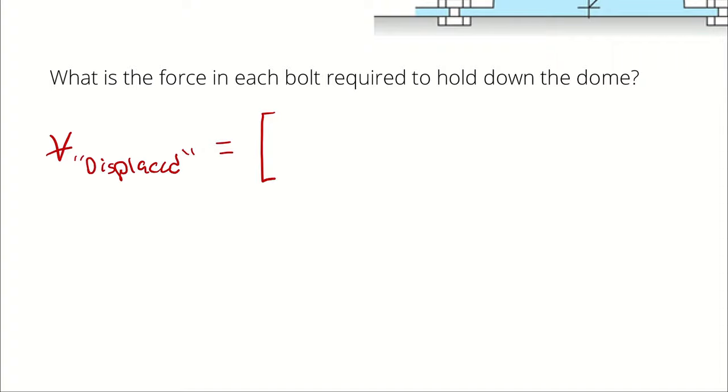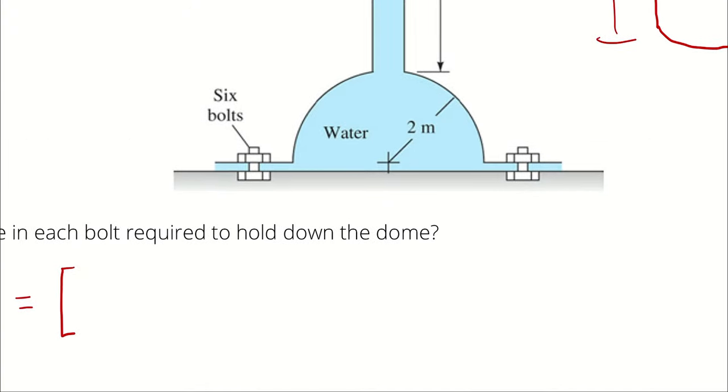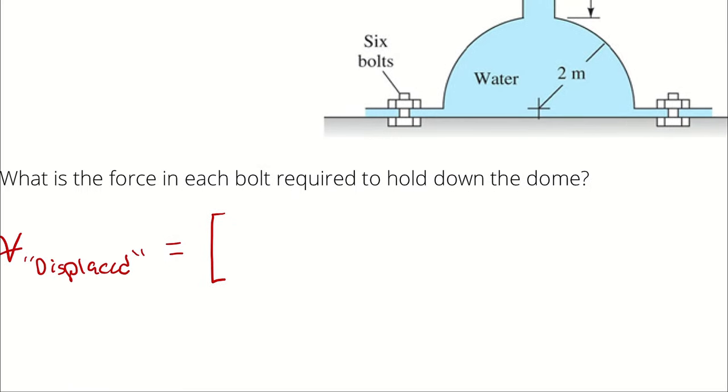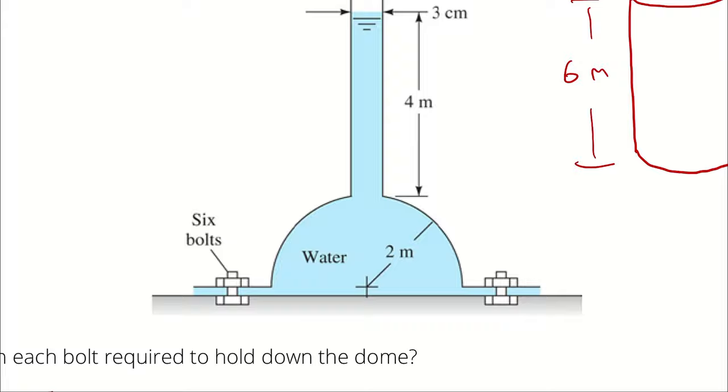The volume of the total cylinder would be the cross-sectional area of that cylinder, which is pi times radius squared times height. The height is six meters.